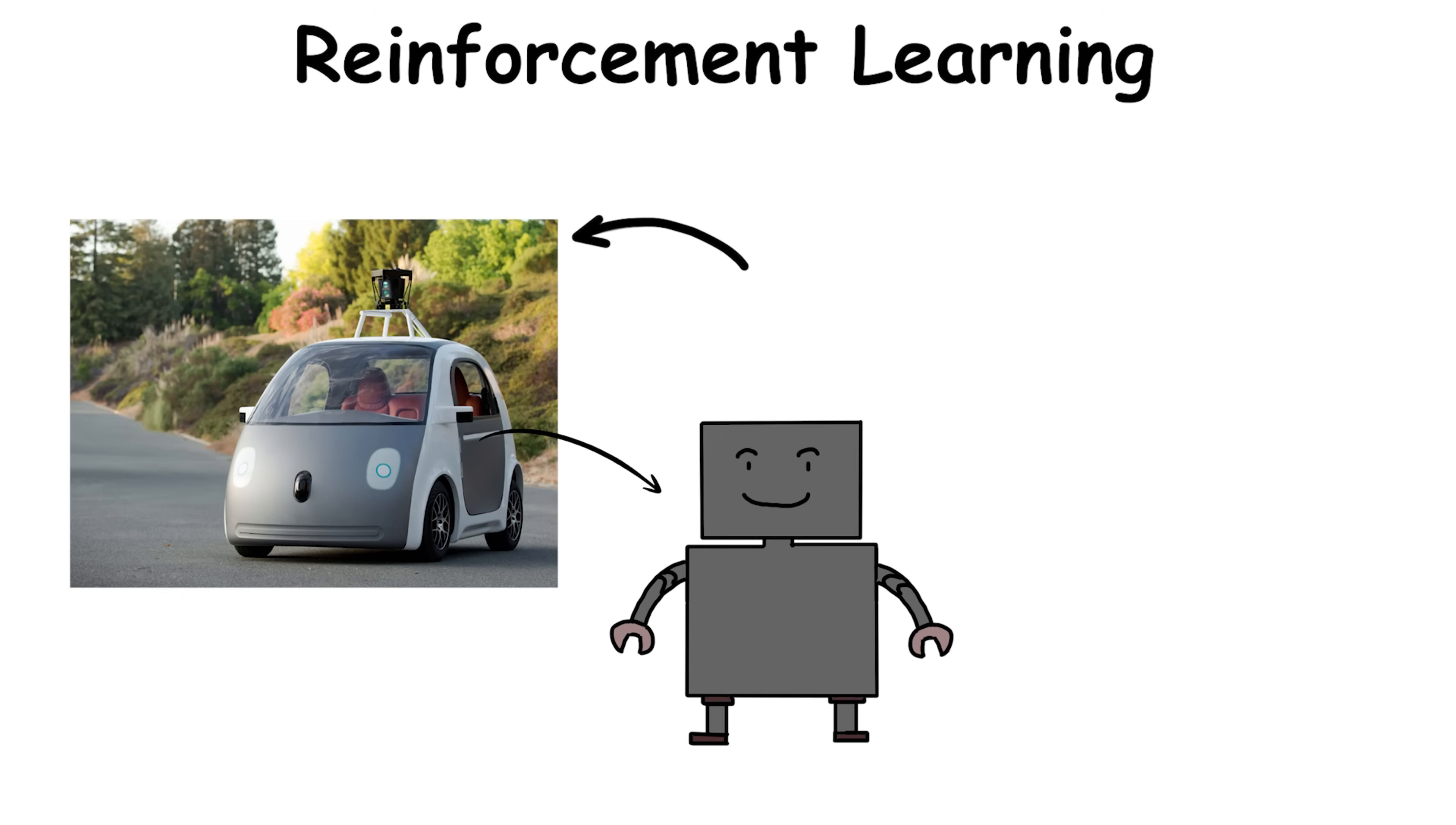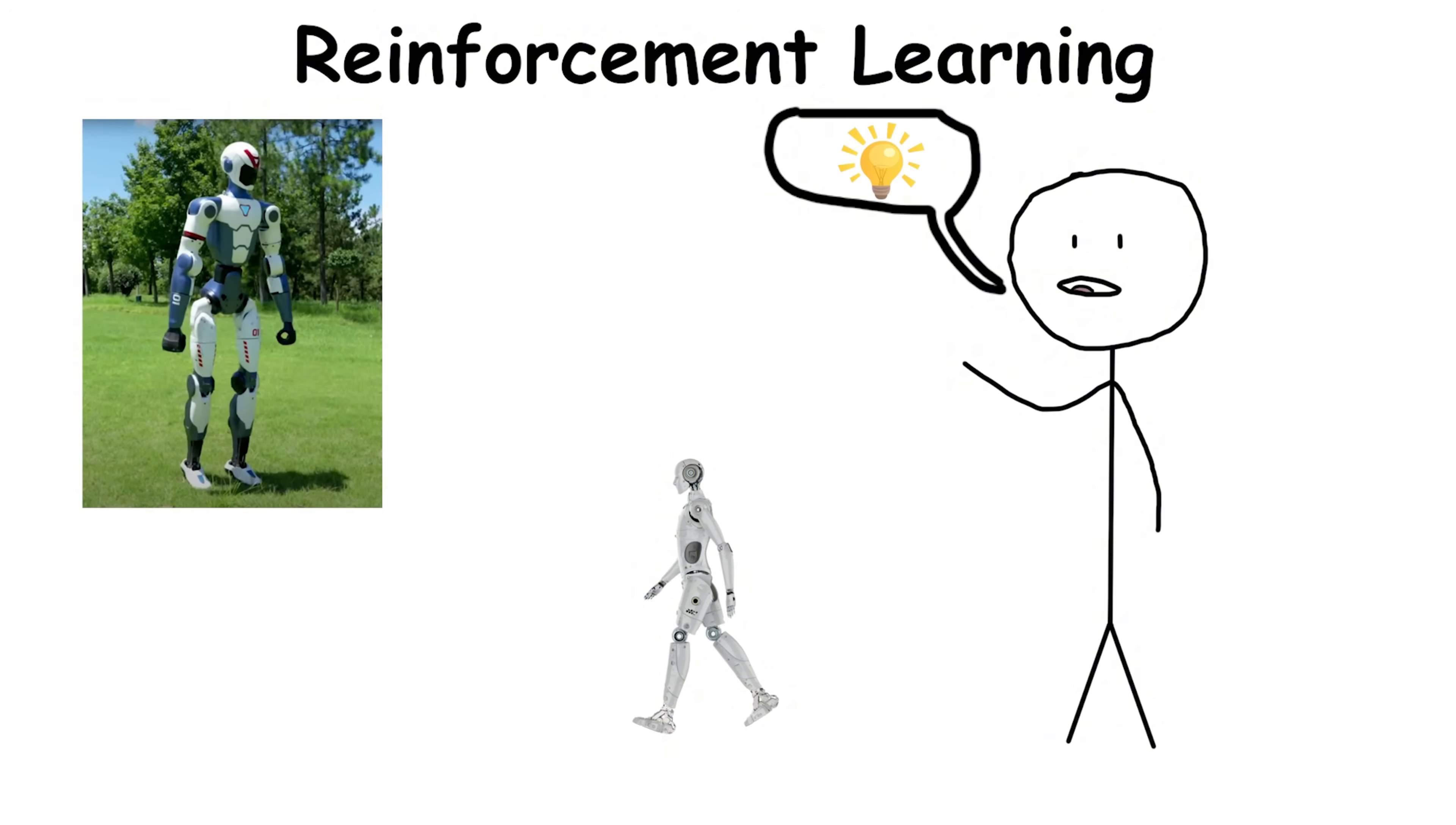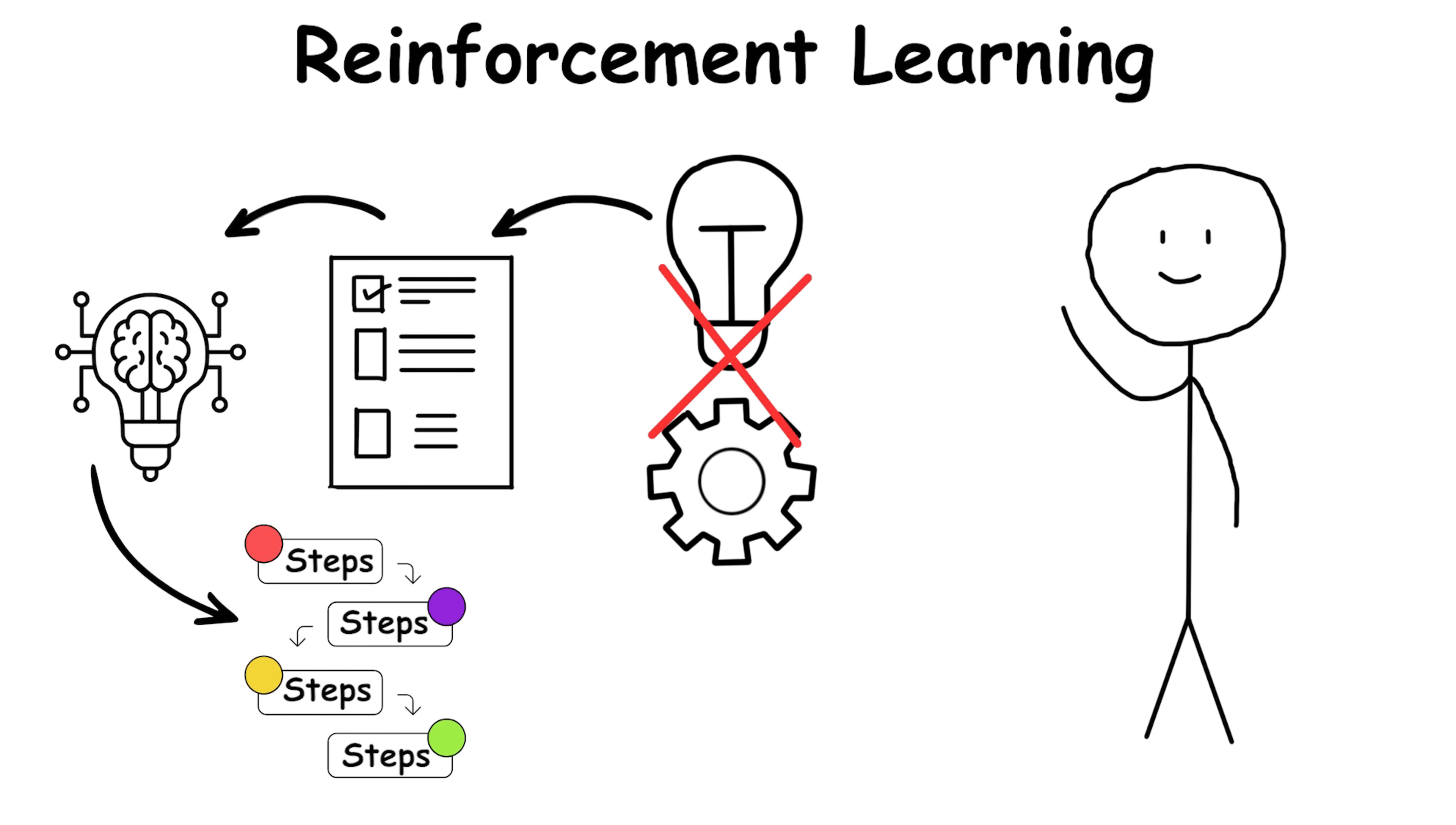Self-driving cars use reinforcement learning to handle unpredictable roads. The system tries accelerating, braking, or turning in simulations, seeing what keeps the car safe and efficient while avoiding crashes. Robots learn to walk using this method, falling over and over, tweaking angles and timing until they stay upright and navigate rough terrain. It's not about memorizing answers, it's about learning sequences of actions that lead to long-term success, even if mistakes happen along the way.